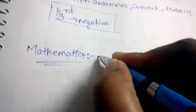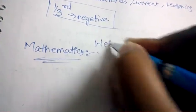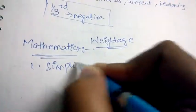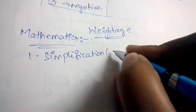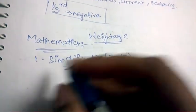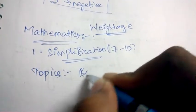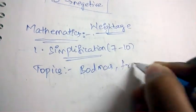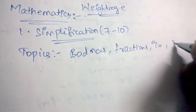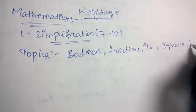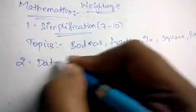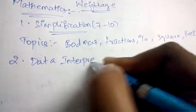Coming to topics in Mathematics, I will also tell you the weightage of each and every topic. The first topic is Simplification — the weightage is 7 to 10 questions. The topics covered under simplification are BODMAS, fractions, percentages, square roots, and reciprocal of numbers.